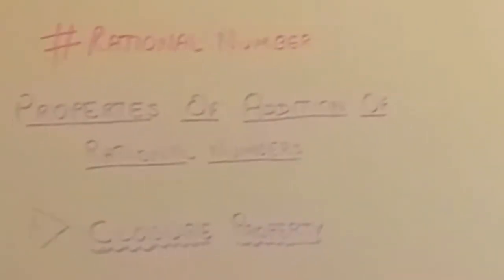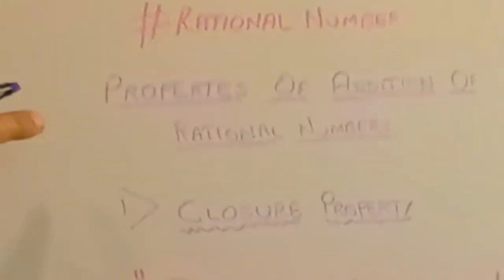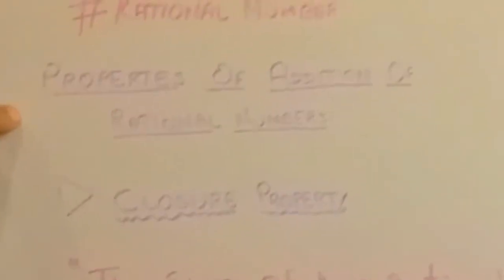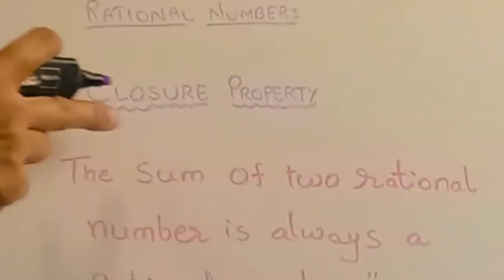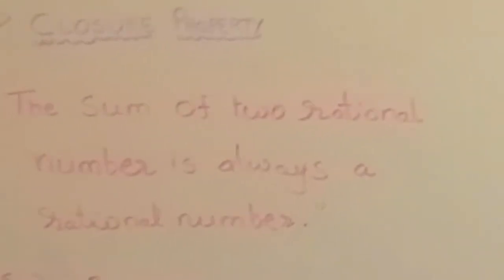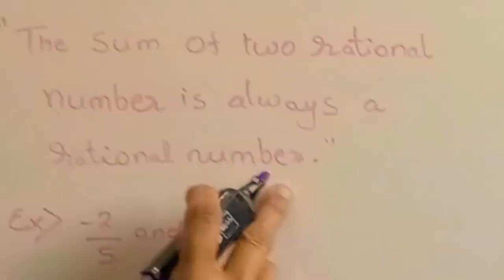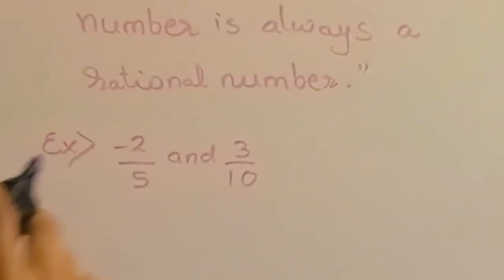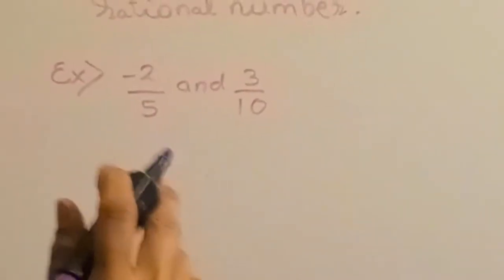Hello everyone, welcome to Shivik Tutorials. Our today's topic is properties of addition of rational numbers. First property: closure property. The sum of two rational numbers is always a rational number. Whenever we add two rational numbers, the sum is always a rational number.